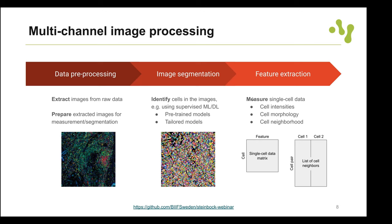The masks were regenerated. We can now apply them to the images and extract features from our cells. One of the first features to extract is the channel intensity values per cell — these are aggregated so all pixels corresponding to the same cell are averaged. The command is 'steinbock measure intensities'.